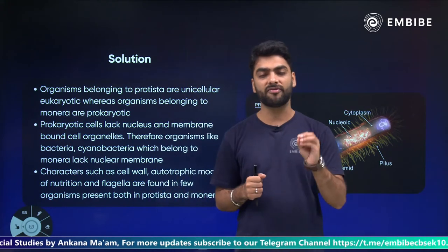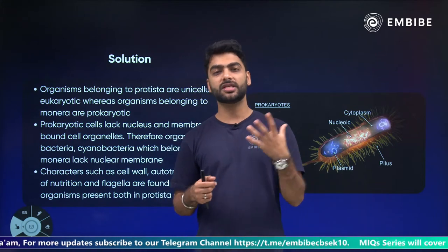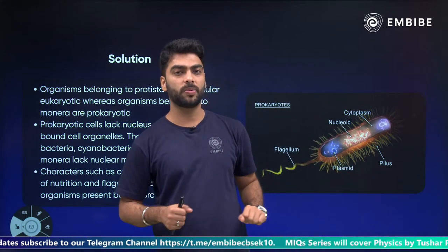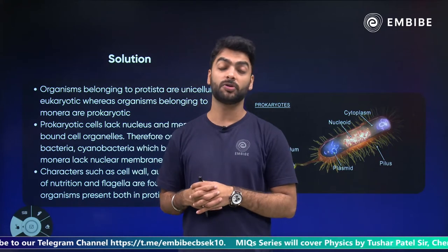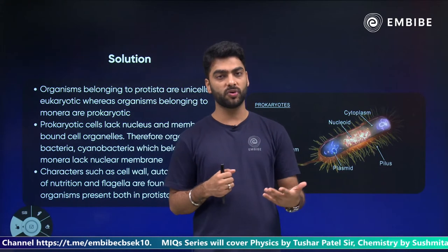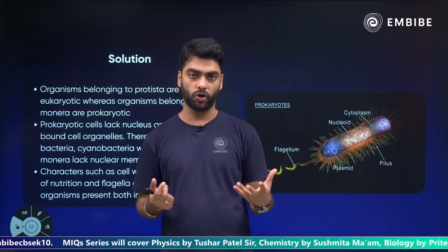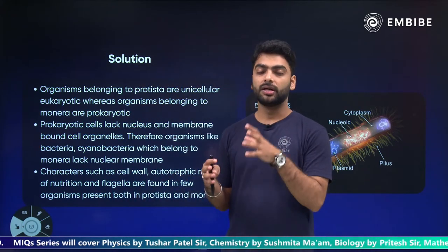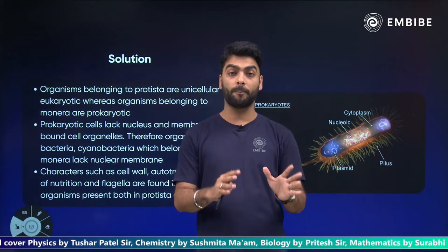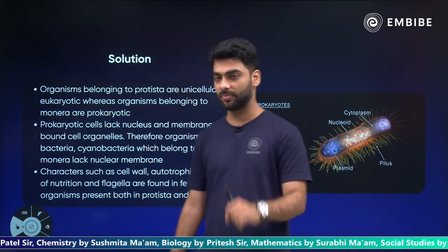Monera do not have a well-defined nucleus or a nuclear membrane — they have nucleoid, which is the nuclear material freely suspended in the cytoplasm. But in Protista, there is a proper nucleus. In some organisms, there are even two nuclei, like in Paramecium.